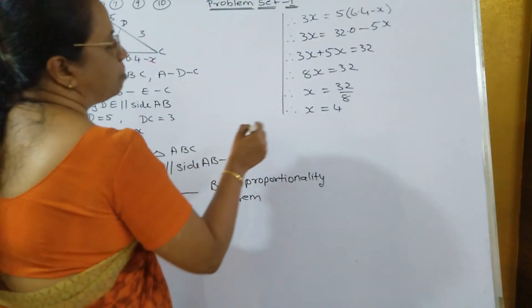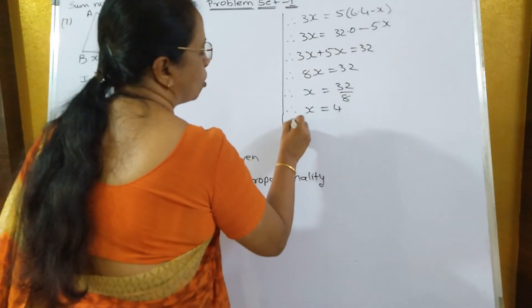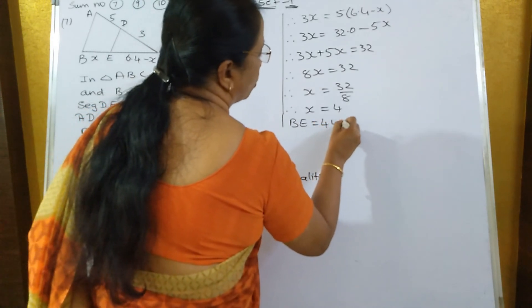We have asked you to find out the value of BE. So, BE is equal to how much? BE is equal to 4 units.